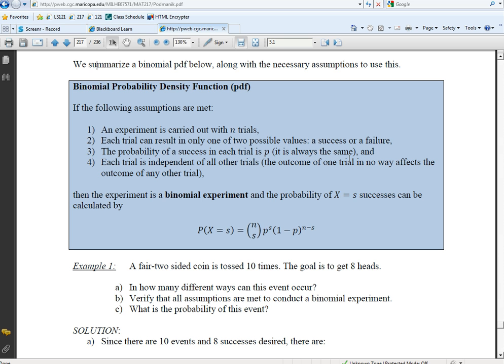In that case, we had a 20% defective rate, regardless of the other light bulbs. Which is the fourth necessity that we need to meet. The fourth assumption in order to be able to use this. Each trial is independent of all other trials. That is, the outcome of one trial in no way affects the outcome of any other trial. Then the experiment, if these four assumptions are met, and we need to check off each of these four assumptions one by one, then we have a binomial experiment. And the probability of X equals s successes can be calculated by, well, hey, there's our formula.